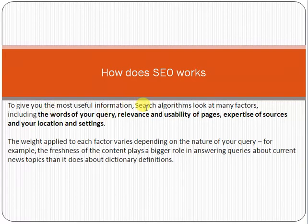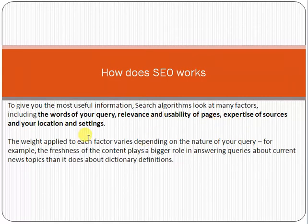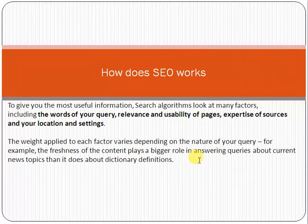Searching algorithms look at many factors, for example: the words of your query that you are typing in the search engine, relevance and usability of your web pages, expertise of sources, your location settings, links, and more. The weight applied to each factor varies depending on the nature of your query. For example, the freshness of the content plays a bigger role in answering queries about current news topics than it does for dictionary definitions.